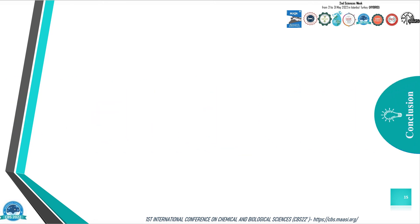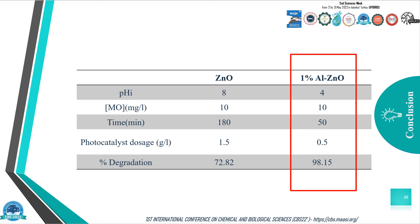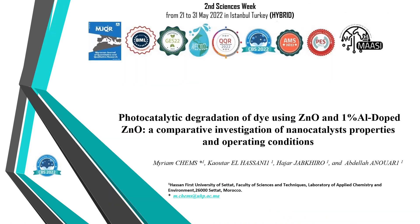Conclusion. Using a simple and low-cost precipitation method, we successfully synthesized zinc oxide and its derivative aluminum-doped zinc oxide, characterized via various methods, and investigated the degradation conditions. As a result, the photocatalytic study uncovered a promising potential of aluminum-doped zinc oxide to enhance the degradation of methyl orange from 72% to 98% under optimized conditions. I would like to thank you for your attention and express my appreciation to the Second Science Week for having us here today.